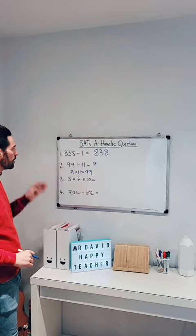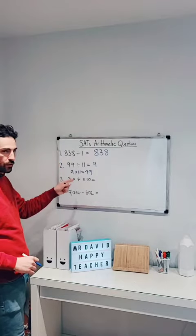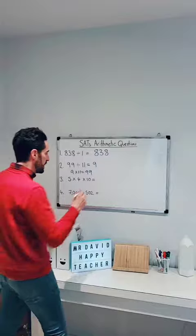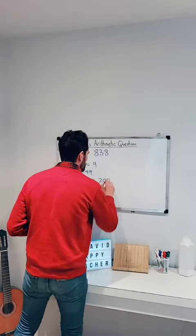And then question 3, we've got 5 times 4 times 10. So I'll do 5 times 4, which makes 20. 20 times by 10, I just add a 0 on the end. So it becomes 200.